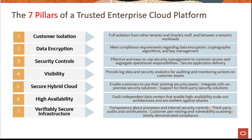These seven pillars include areas such as customer isolation, which basically means ensuring all the workloads of one customer are isolated from another customer and also isolated from Oracle's own staff. Data encryption, ensuring that data at rest and in transit is encrypted and secure. Security controls, which basically mean providing secure application delivery and tools needed for that. Visibility — what is going on within your Oracle Cloud Infrastructure account or tenancy — providing data logs and security analytics for auditing and monitoring different customer actions.